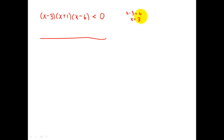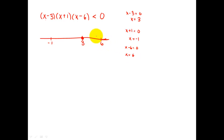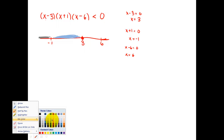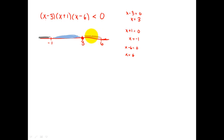The trick to these is to put the zeros on a number line. What do I mean by the zeros? Where does each factor equal zero? So x minus 3 equals zero when x equals 3 — that's the first thing I'm going to stick on the number line. Then x plus 1 equals zero when x equals negative 1, so I stick that on the number line. And x minus 6 equals zero when x equals 6, also on the number line. Now I have to see where I have positive and negative regions, so I'll choose a number in each region and test it.